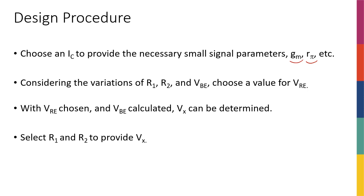These things are really coming from the amplifier specifications that we're going to learn in the next weeks. But let's say that for a certain gm and rpi, you want to design the biasing circuit. If this was the exponential plot — VBE on the x-axis and IC on the y-axis — from the gain of the amplifier you know how much gm you want, meaning you know the slope. So you realize you want to be at a specific point in the plot, and you know what VBE and IC you want to have.